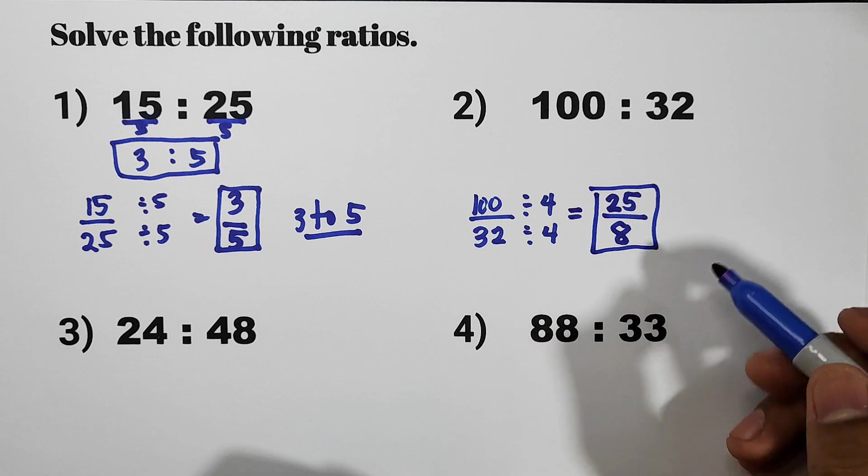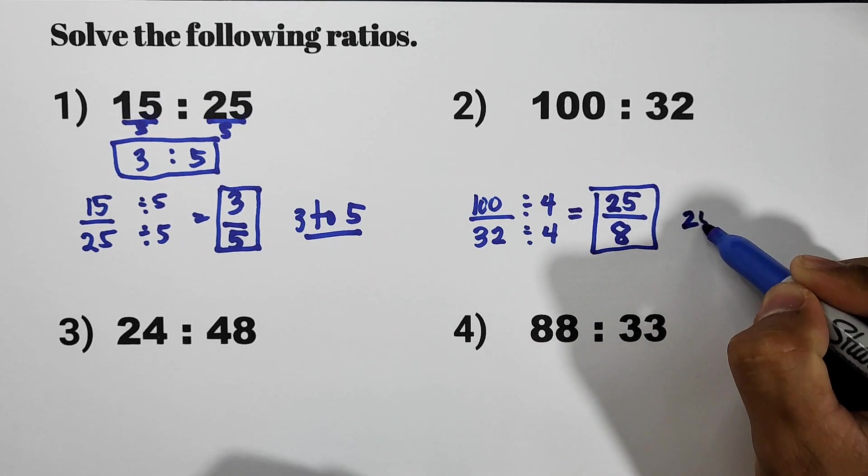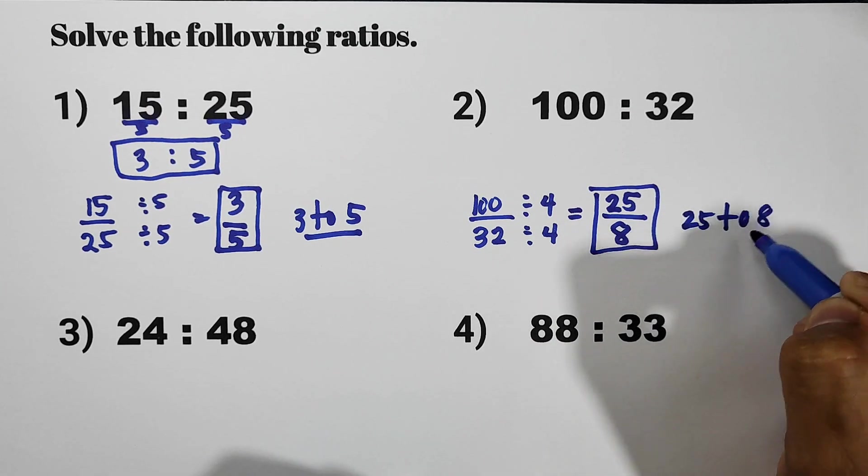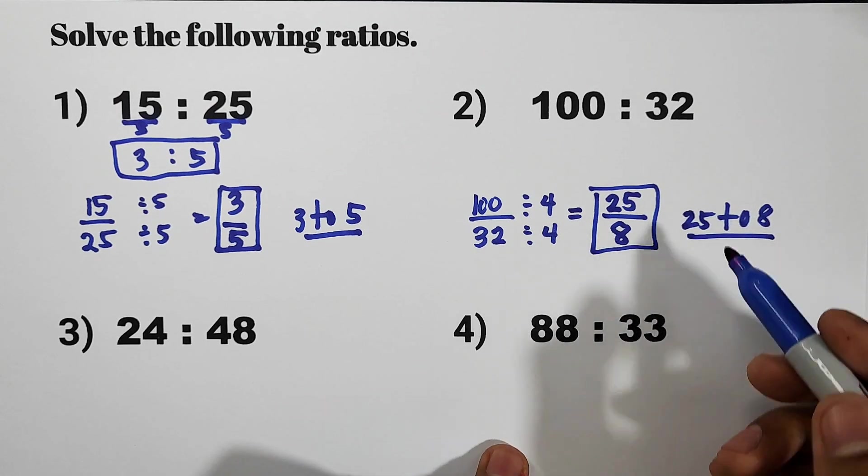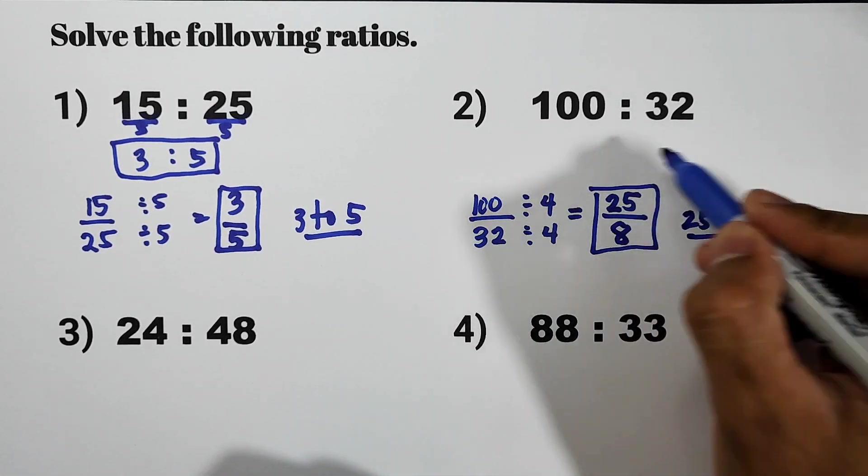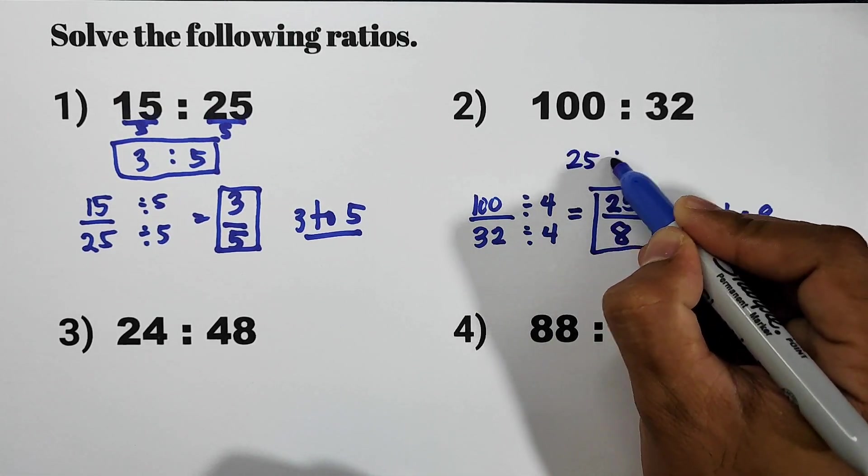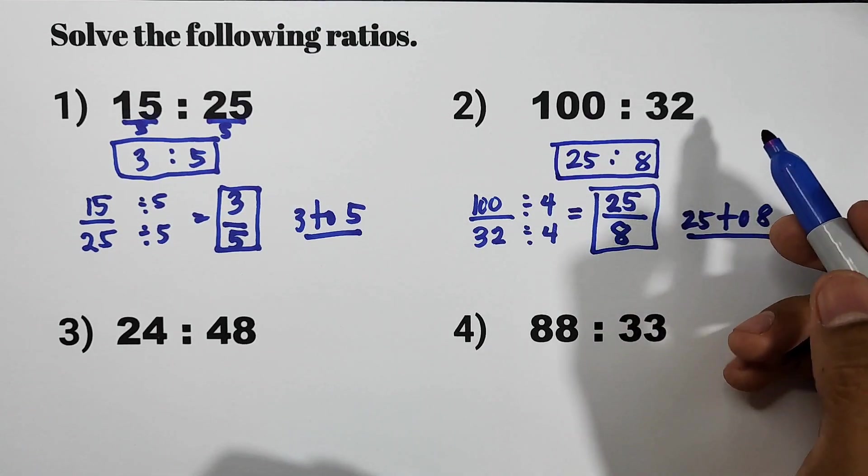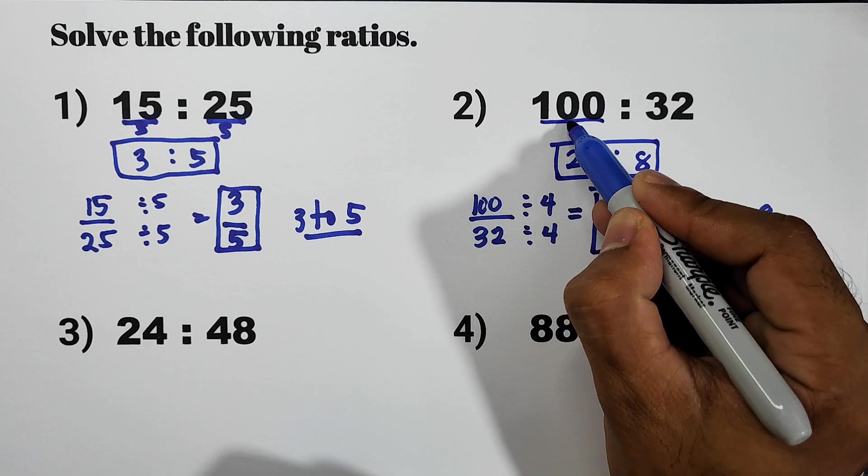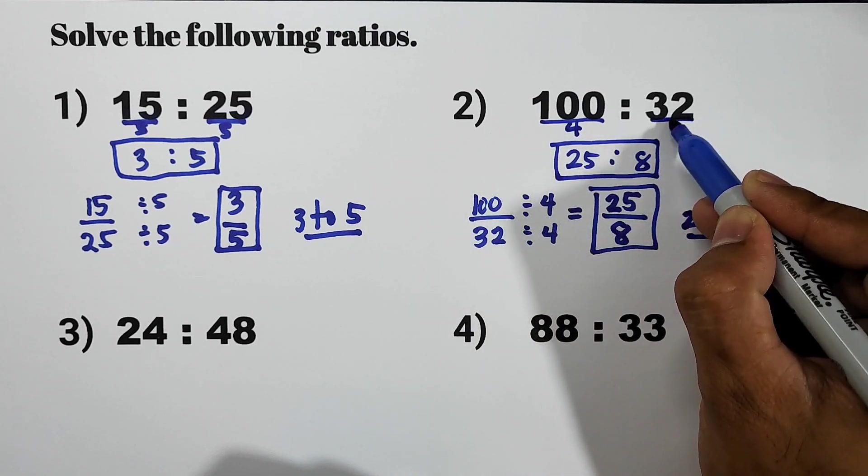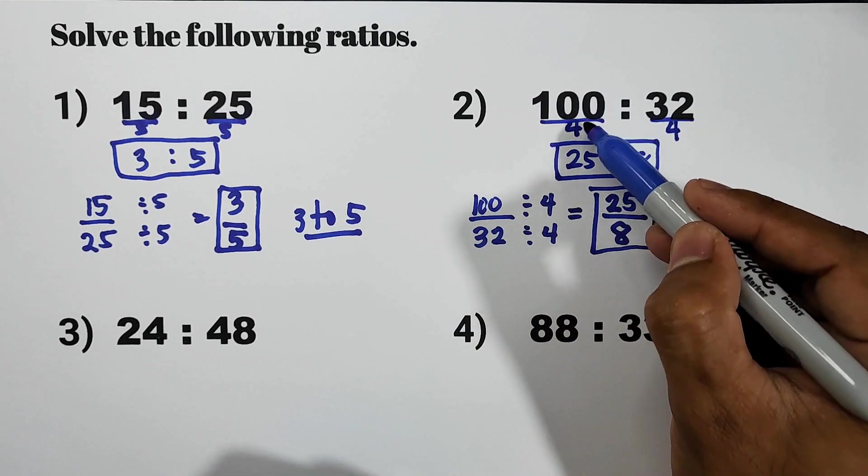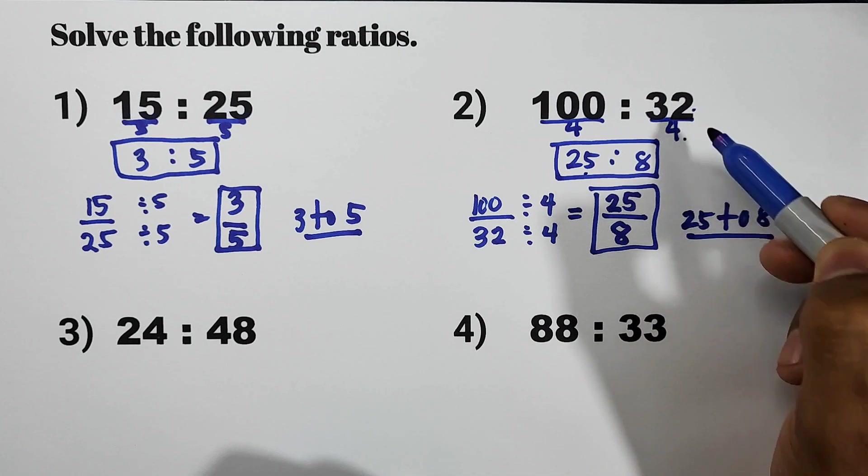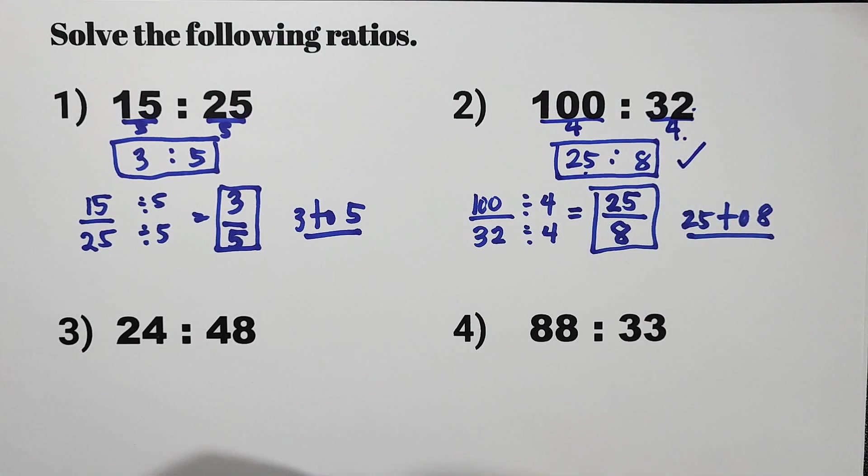We can write it also as 25 to 8. Or in ratio, that is 25 is to 8. By simply dividing 100 by 4 and then 32 by 4. 100 divided by 4, 25. 32 divided by 4, 8.